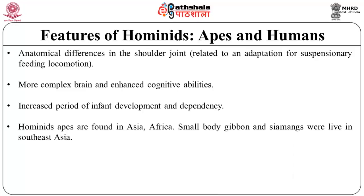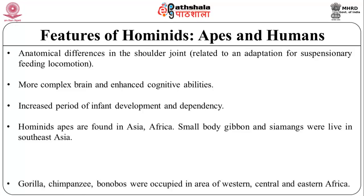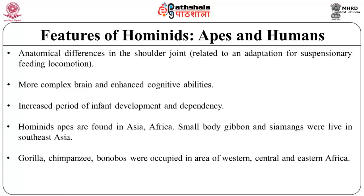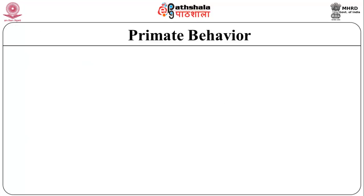Hominid apes are found in Asia and Africa. Small-bodied gibbons and siamangs live in Southeast Asia. Orangutan subspecies live on the islands of Borneo and Sumatra. Gorillas, chimpanzees, and bonobos occupy areas of western, central, and eastern Africa.